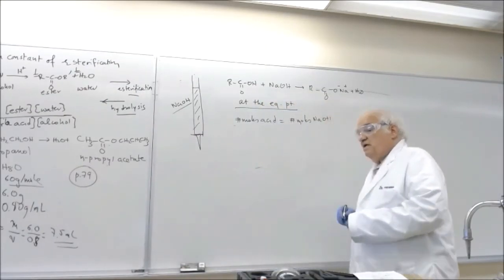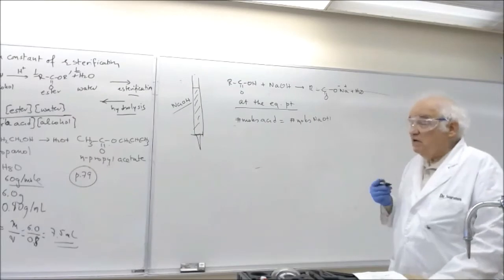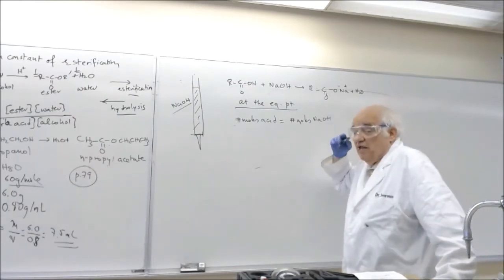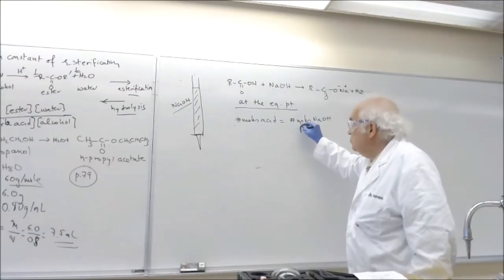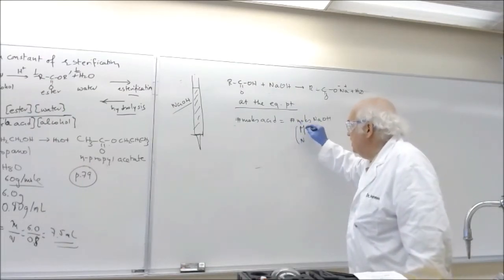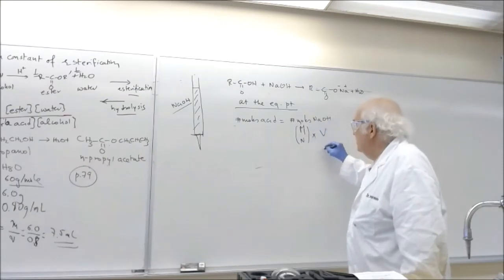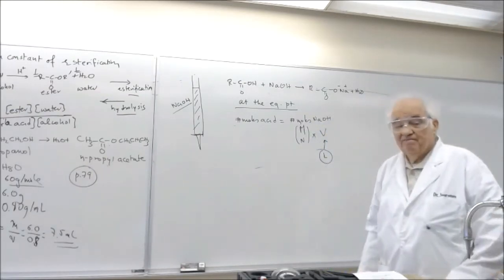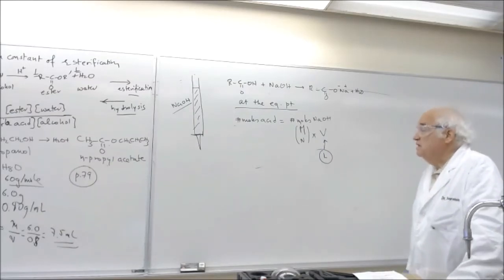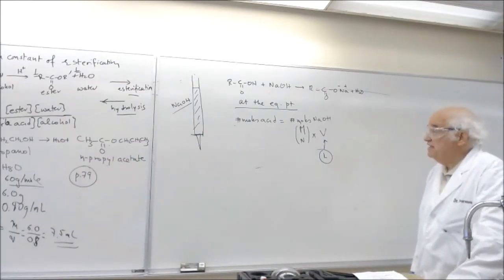Okay, because at the equivalent point, number of moles of acid equals to number of moles of NaOH. Now because NaOH has only one OH, this is equal to molarity equals to normality. And so therefore this is the molarity or normality, it doesn't really make a difference, same thing, times the volume. And the volume has always been expressed in liters.